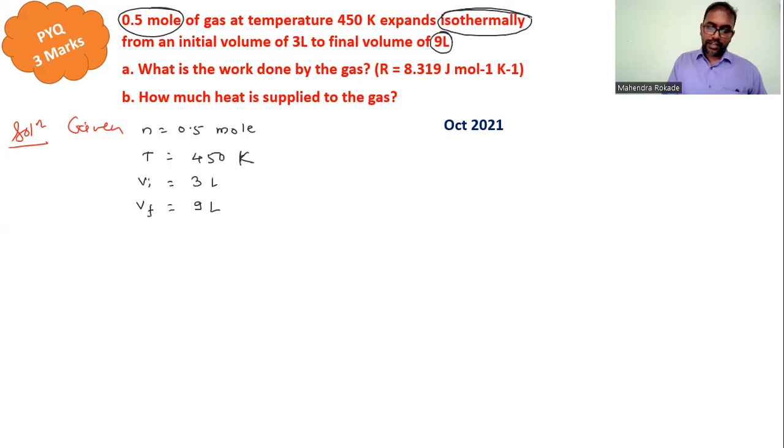The first point is what is the work done by the gas, and here the given capital R is 8.319 in SI system. First thing we have to find out work done in isothermal condition.